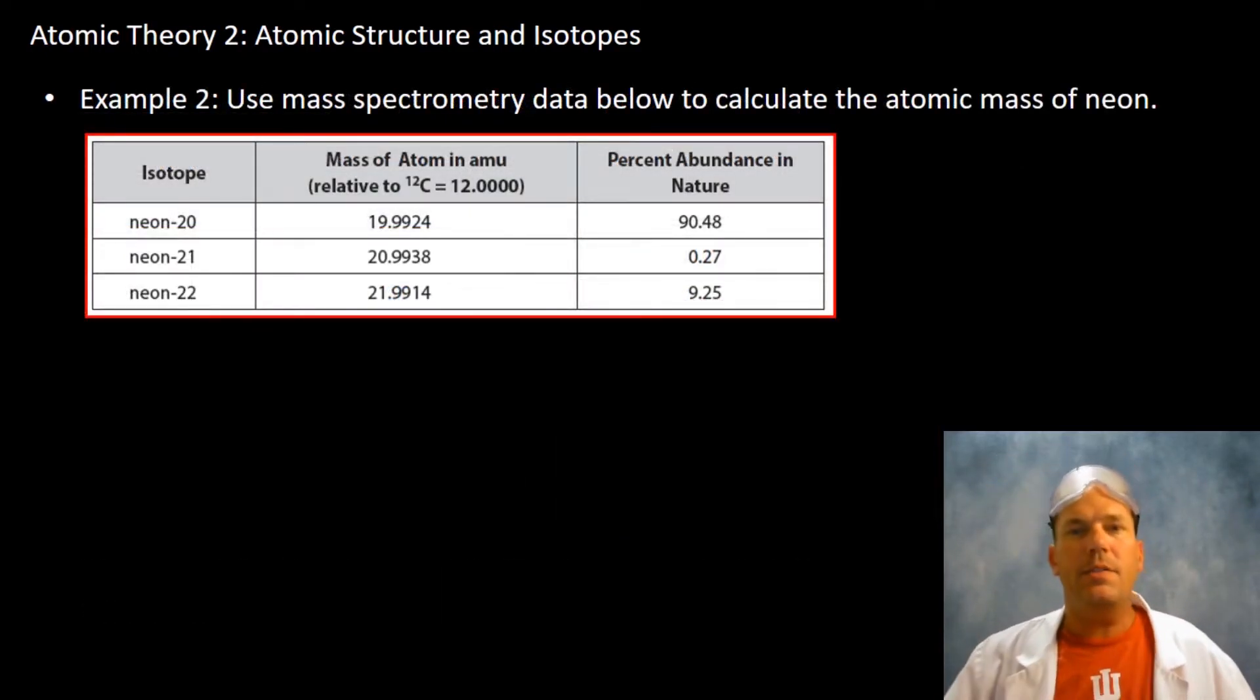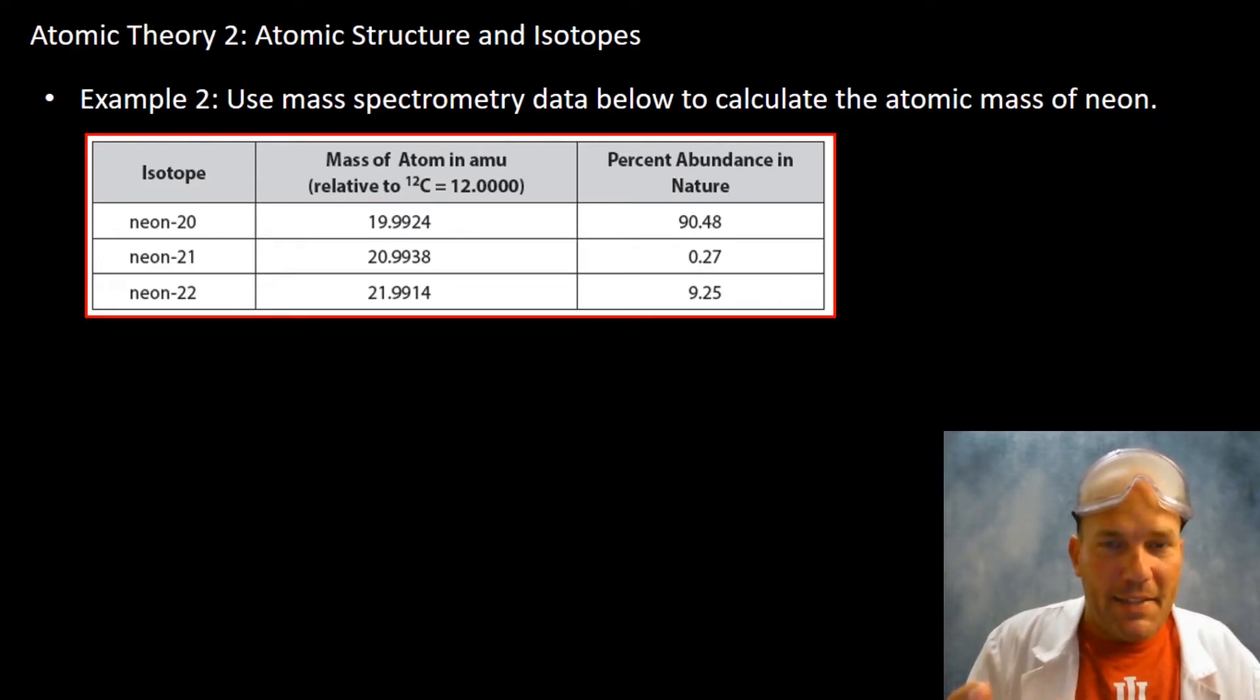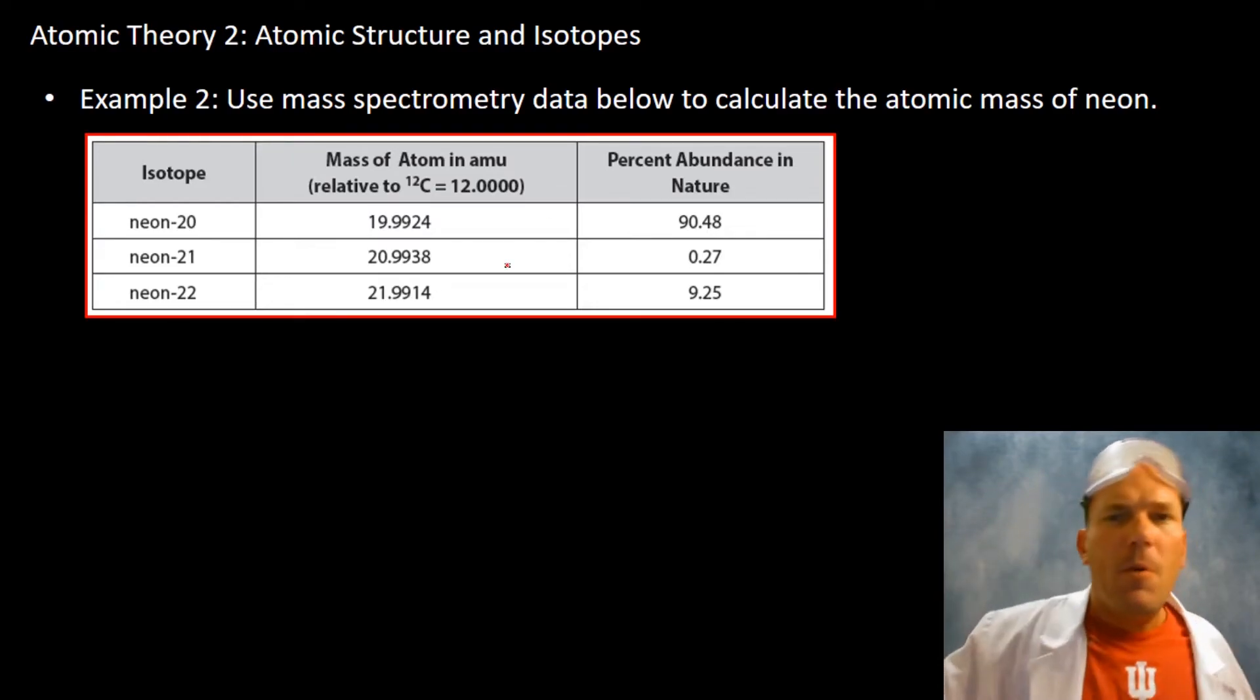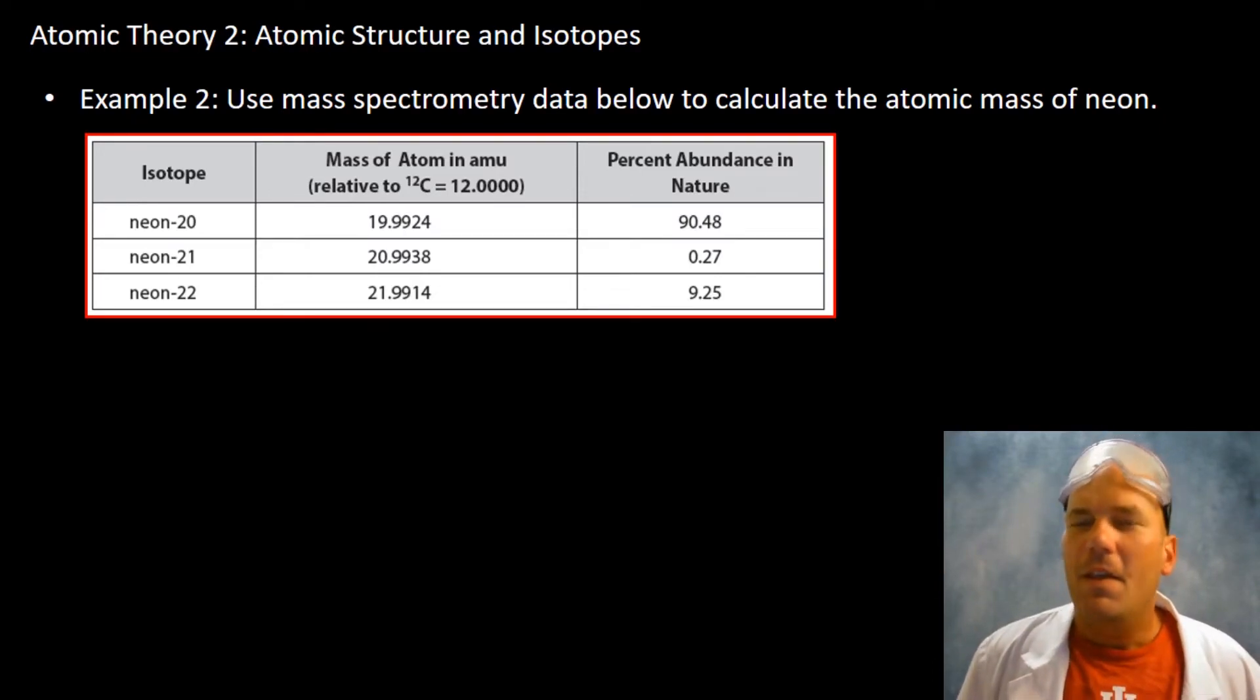Example number two. Here you're given data from a mass spectrometer and you're asked to calculate the atomic mass of neon. You can look at your periodic table and say neon 20.18, that's correct. Where does that number come from? It comes from this computation. We have three isotopes for neon. Neon-20 is far more abundant, so I'm going to make a bold prediction that the number we're going to get is going to be pretty close to 20.